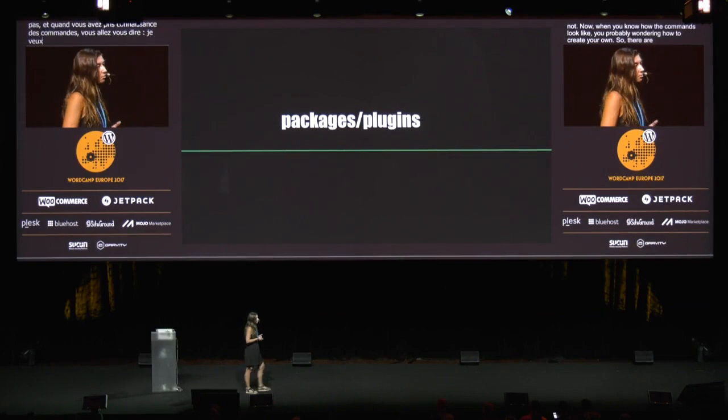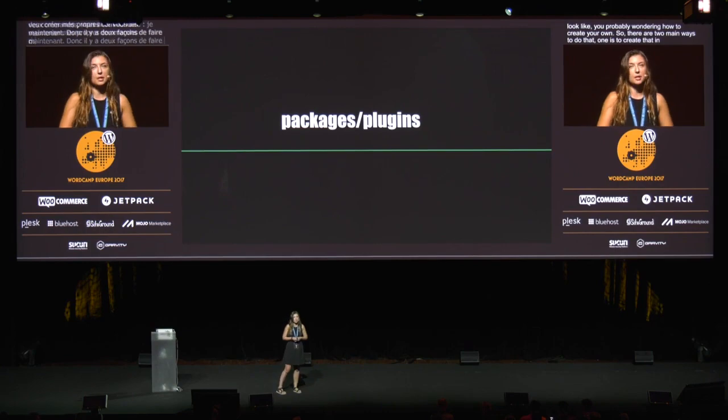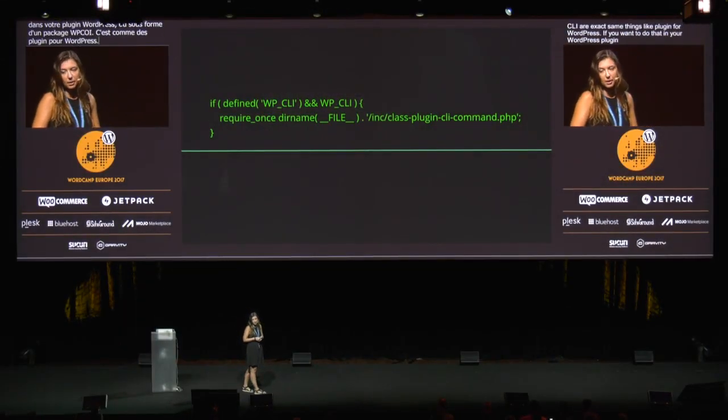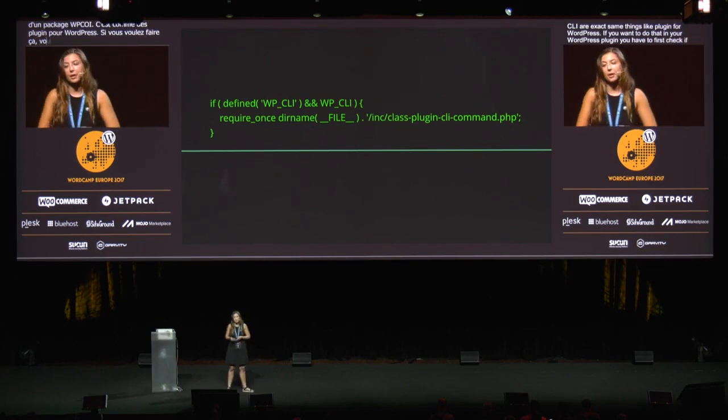Now that you know how commands look, you're probably wondering how to create your own. There are two main ways to do that: one is to create it in your WordPress plugin, and the other is to set it up as a package for WP-CLI. Packages for WP-CLI are exactly the same thing as plugins for WordPress.